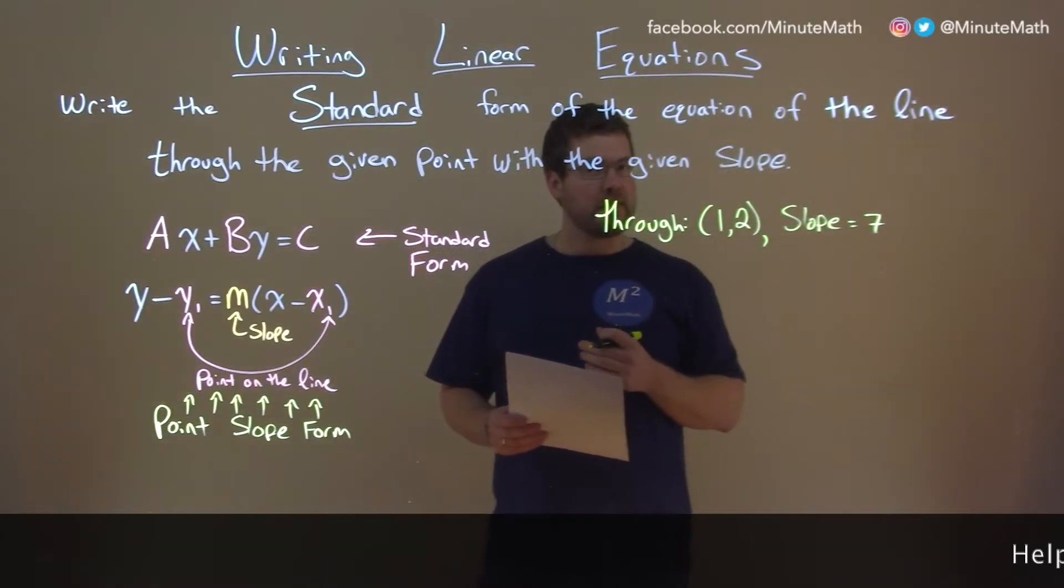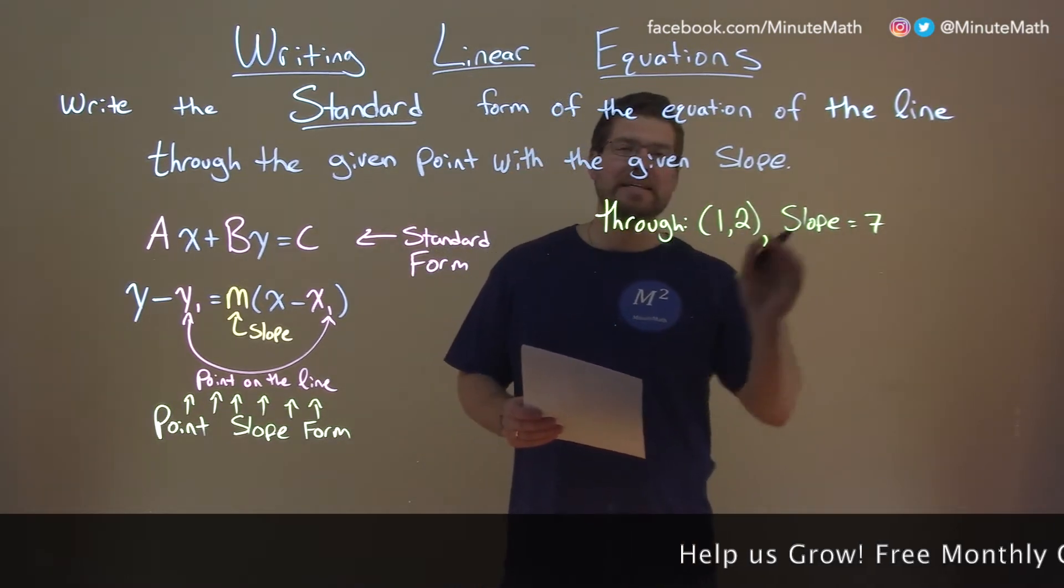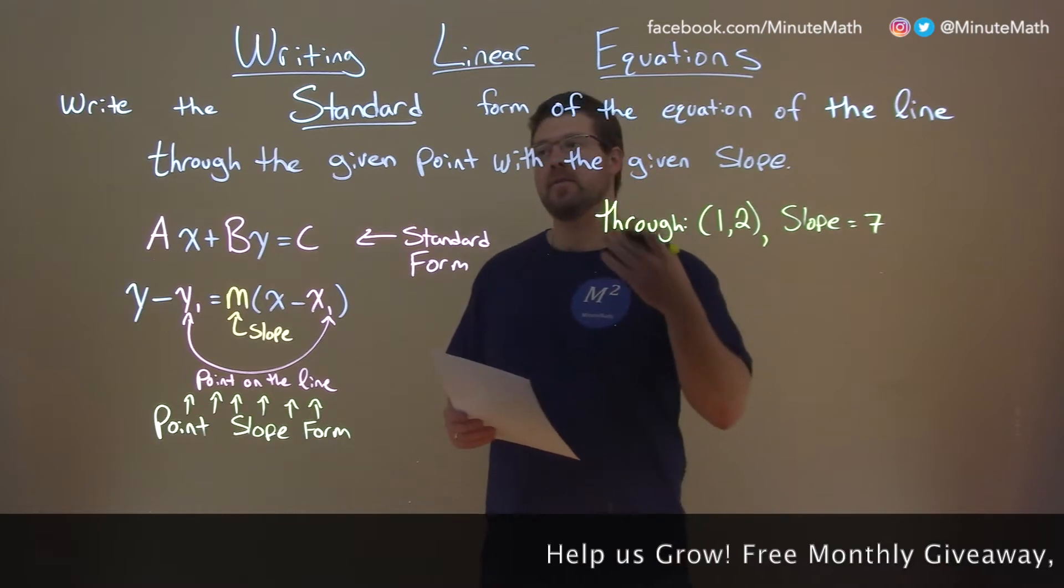So, if I was given this problem through 1 comma 2, and our slope is 7, and we need to write this in standard form.